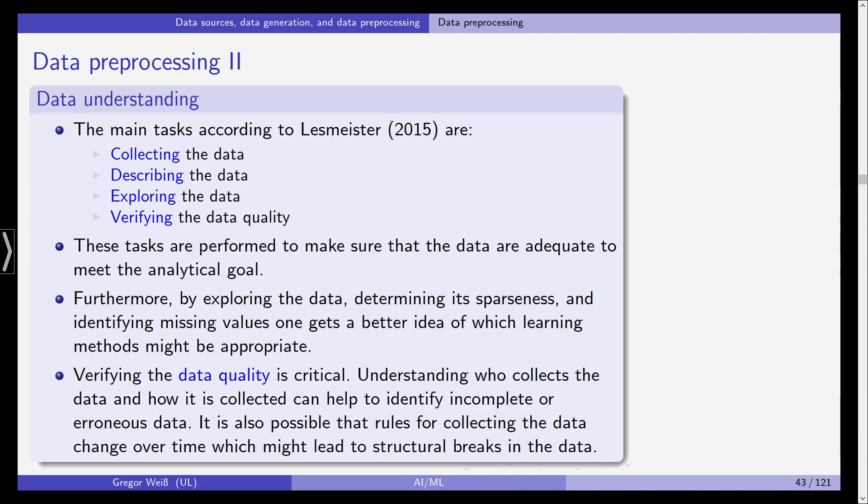Look at the NAs, the not availables. Look at missing values. Look at data values that are completely off the chart and make sure that this is not a data error. In the best case, this is an outlier, and then think about whether you should remove these outliers. These tasks are performed to make sure that the data are adequate to meet your goal that you want to achieve with your data analysis.